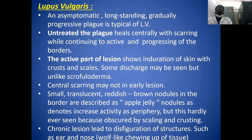Small translucent reddish-brown nodules at the border are described as apple jelly nodules, denoting increased activity at the periphery. This is rarely ever seen because it is obscured by scaling and crusting. Chronic lesions lead to disfiguration of structures such as the ear and the nose — described as wolf-like destruction of tissue.